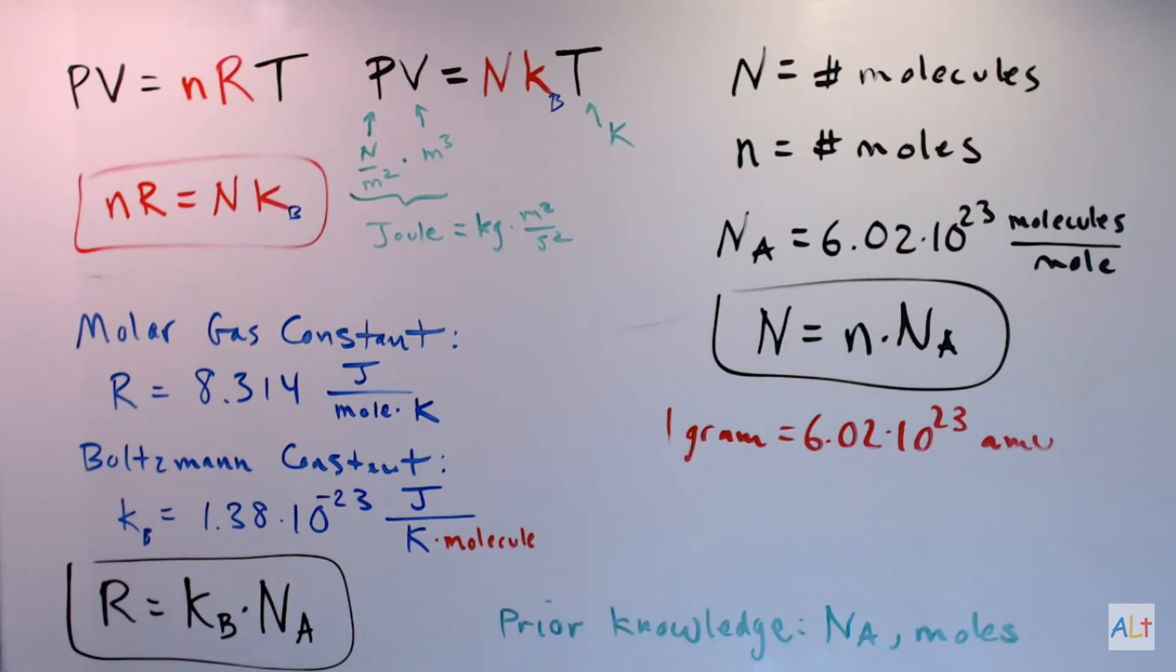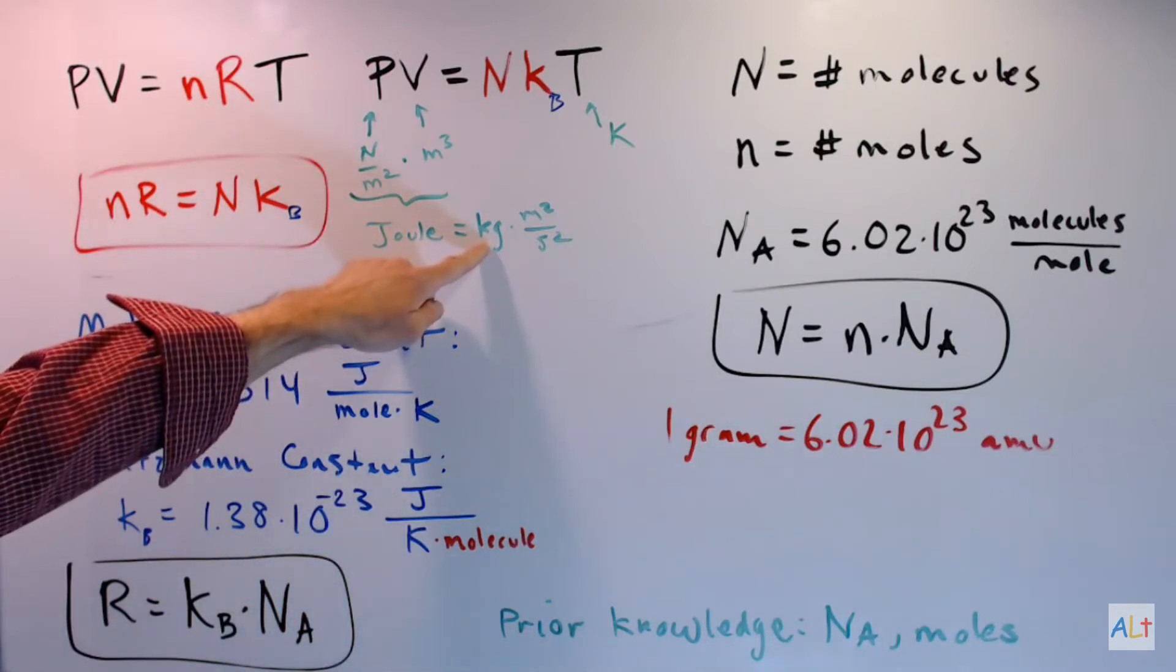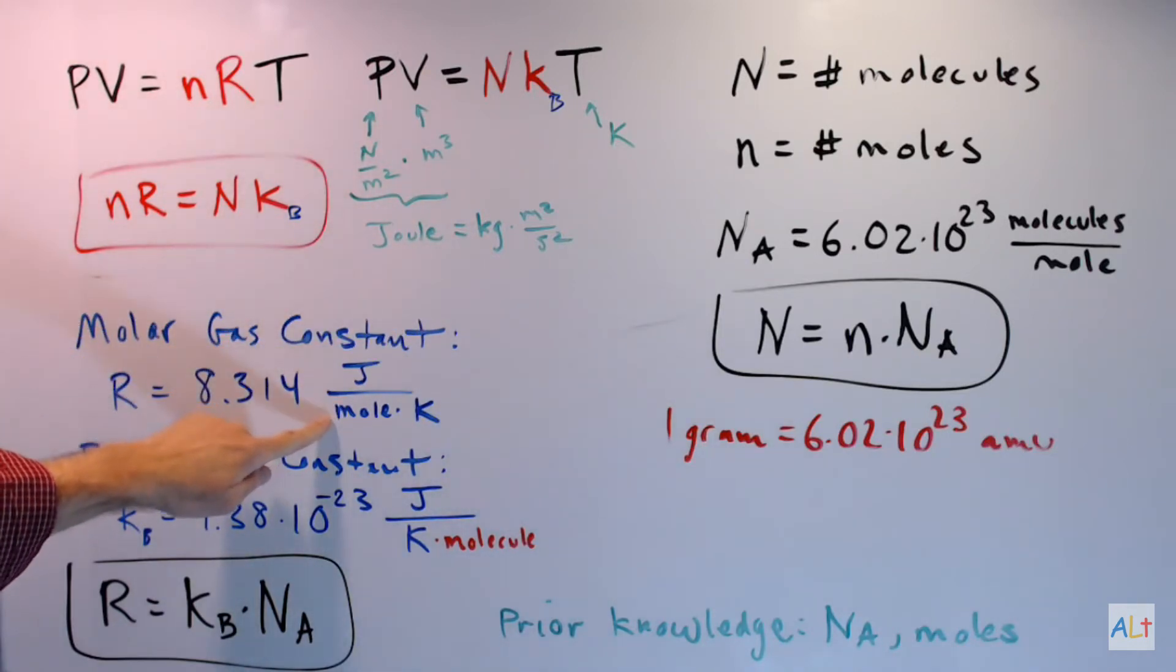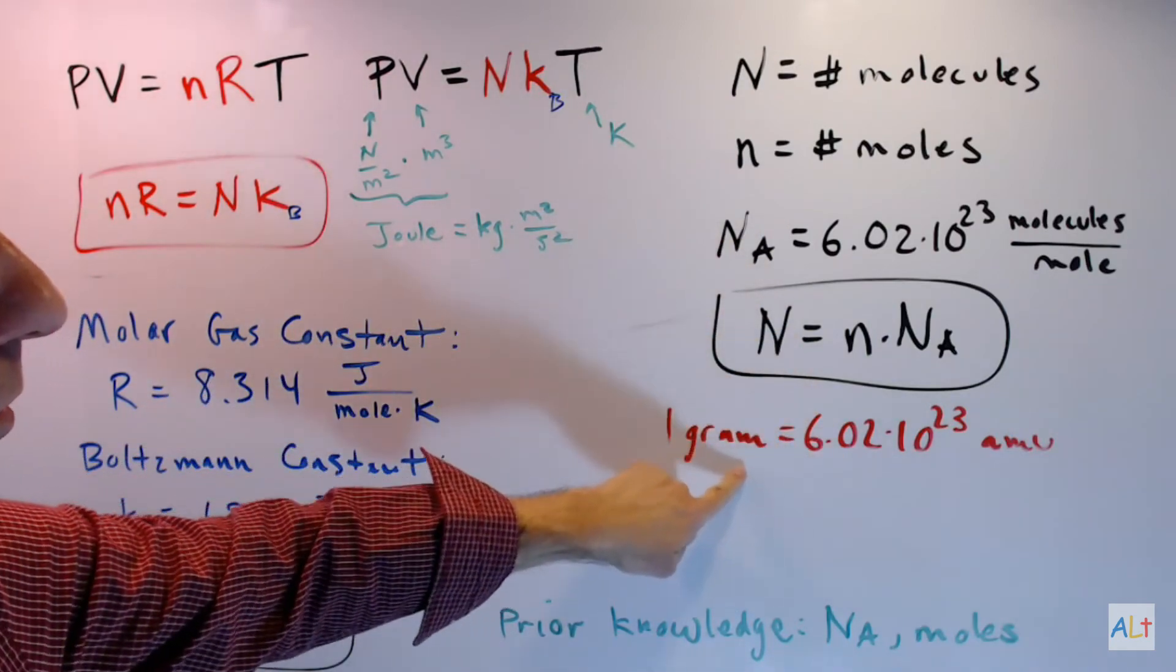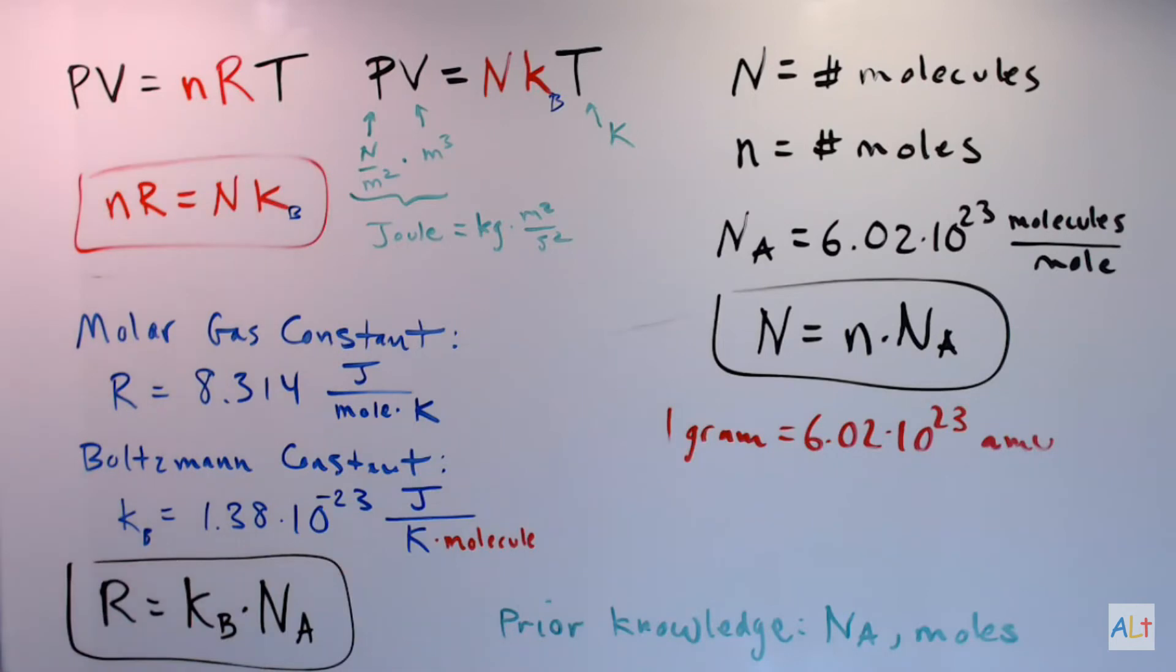Avogadro's number is the conversion ratio between grams and atomic mass units. Look closely at the molar gas constant. It has joules in the numerator, which is defined in terms of kilograms. It has moles in the denominator, which is defined in terms of grams.